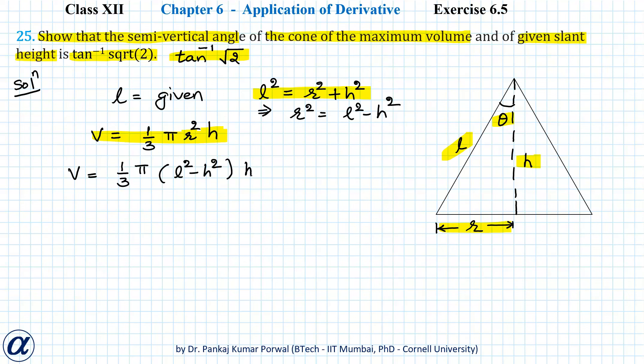So V equals π by 3 times (l squared h minus h cubed). To maximize V, we have to set dV by dh equals to 0. Let's find dV by dh.